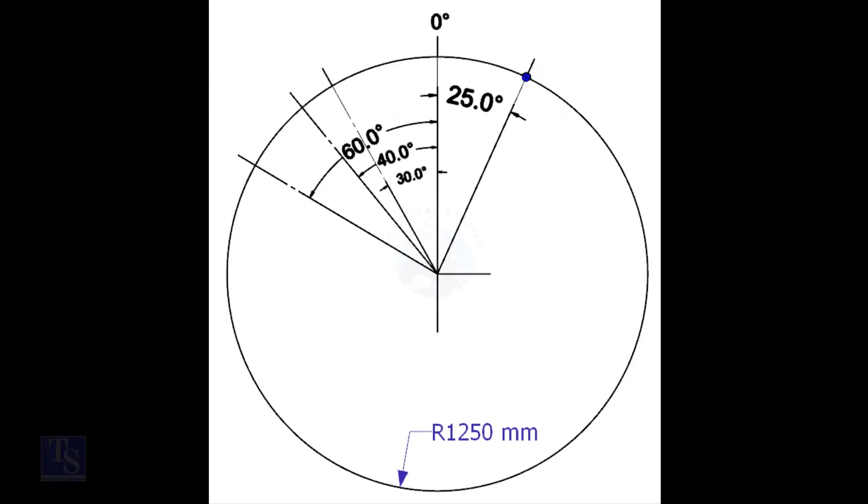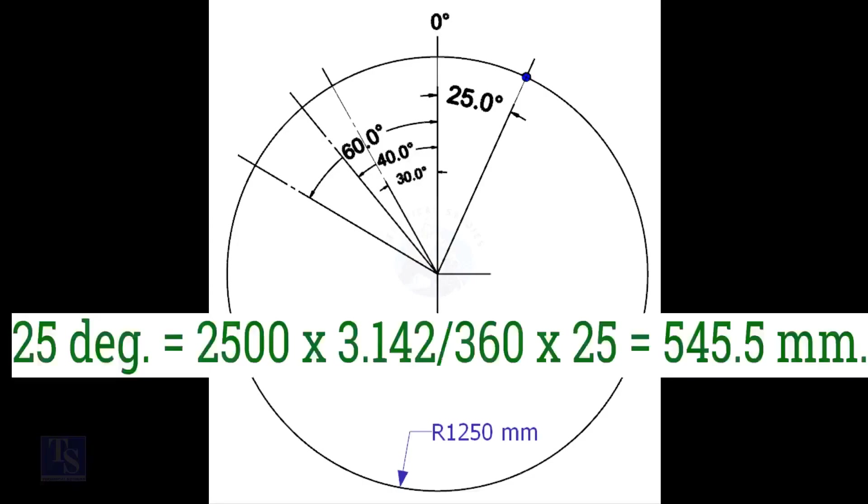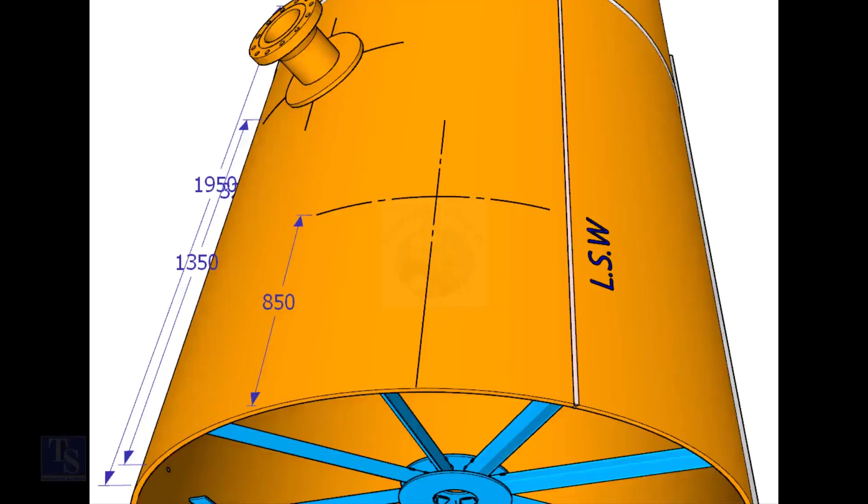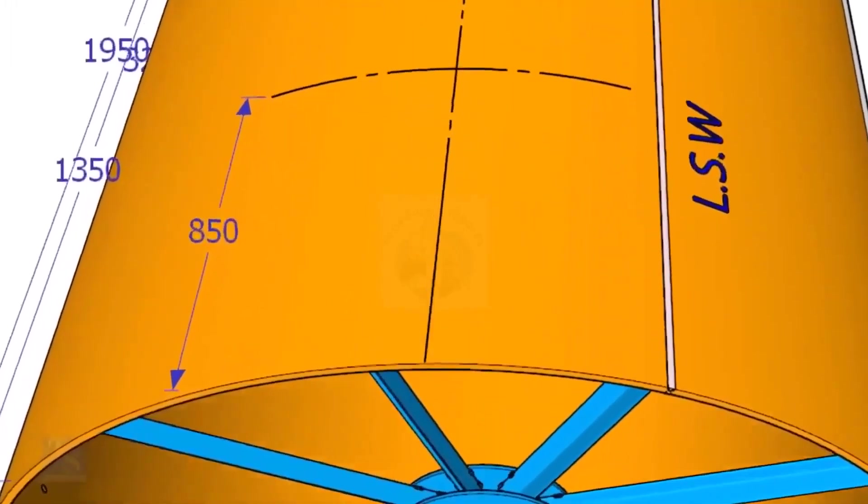We have the included degree and the diameter of the tank. Let us calculate the arc length. Arc length for 25 degree is equal to outer diameter into 3.142 divided by 360 into 25 is equal to 545.5 millimeters. Mark this distance on the end of the shell.